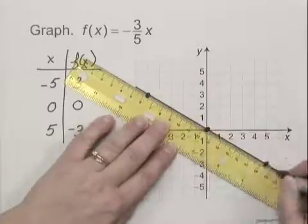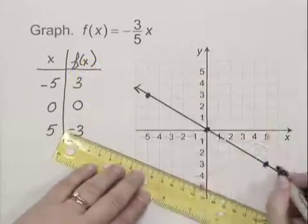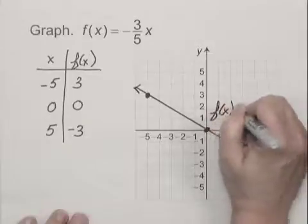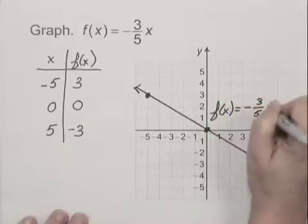So we draw a line through the points and we label it f of x equals negative three fifths x.